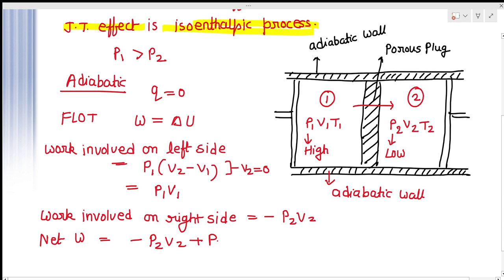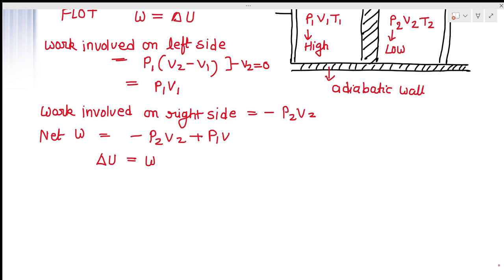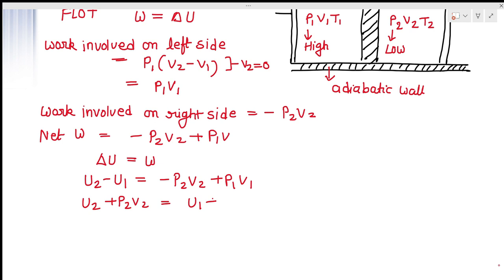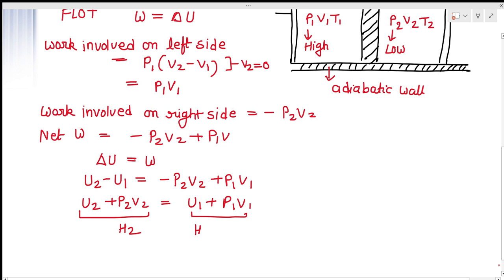Now we know that delta U is equal to W. So delta U, meaning U2 minus U1, will be equal to minus P2·V2 plus P1·V1. Rearranging, U2 plus P2·V2 will be equal to U1 plus P1·V1. We know that U plus PV is equal to enthalpy, so H2 will be equal to H1. This means the enthalpy of the gas which has moved across the porous plug will remain unchanged — or we can say that the Joule-Thompson expansion is an iso-enthalpic process.